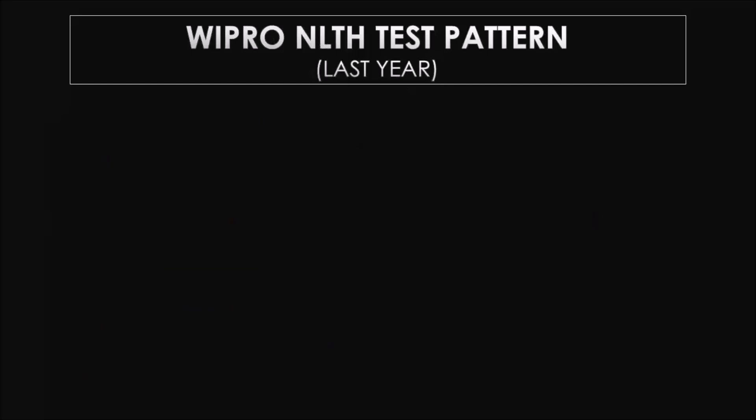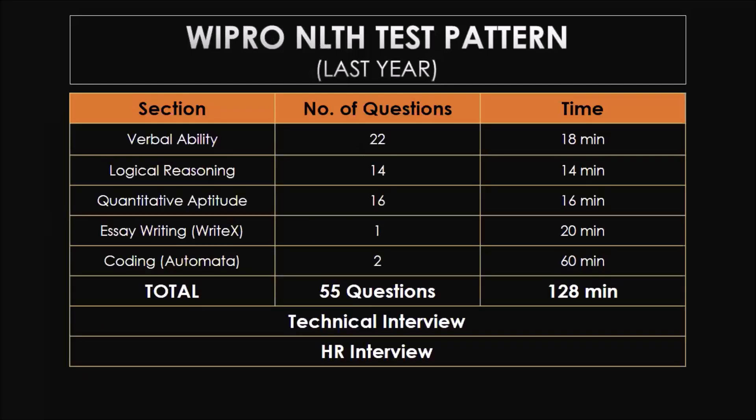Now the Wipro NLTH test pattern — again, this is from last year's data. Verbal ability: 22 questions, 18 minutes — less than one minute per question. Logical reasoning: 14 questions, 14 minutes. Quant: 16 questions, 16 minutes. Essay writing — this is one section you don't get to see in a lot of places; it has been a part of Wipro's hiring process for many years. After that, we have the coding round, that is the automata round. Total number of questions is 55 and the total time given is 128 minutes, slightly more than two hours.